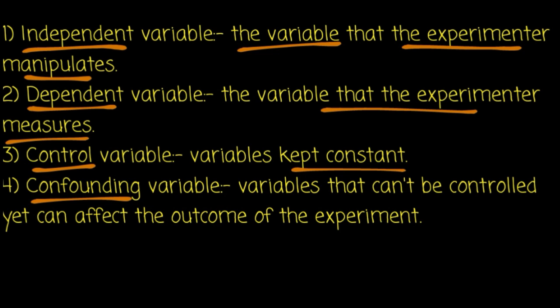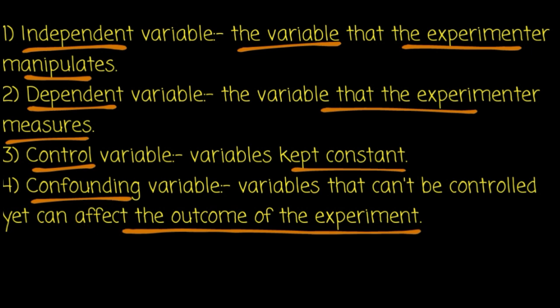Control variables are important in maintaining the validity of an experiment. Confounding variables are not desired. We need to control variables so they do not affect the outcome, ensuring the result reflects only the treatment being tested.